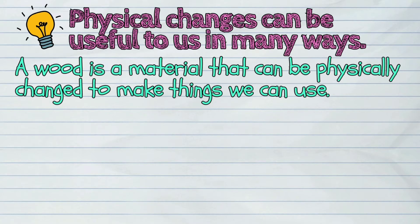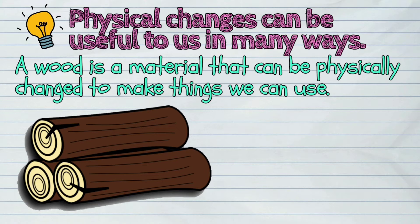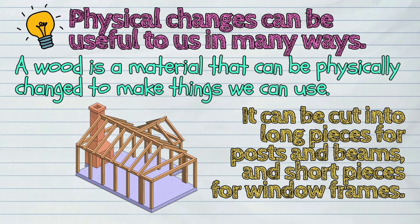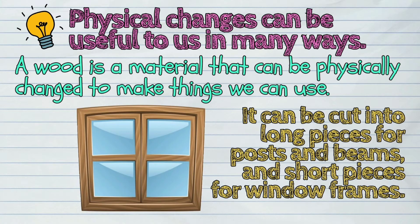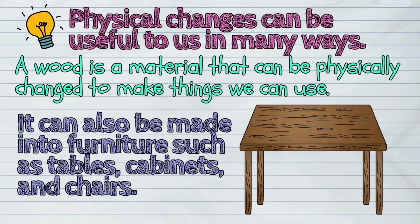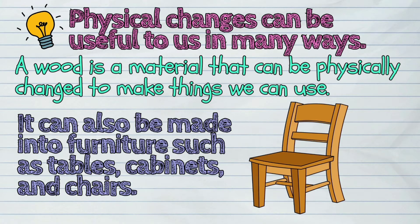For example, wood is a material that can be physically changed to make things we can use. It can be cut into long pieces for posts and beams, and short pieces for window frames. It can also be made into furniture such as tables, cabinets, and chairs.